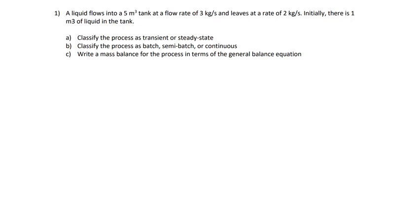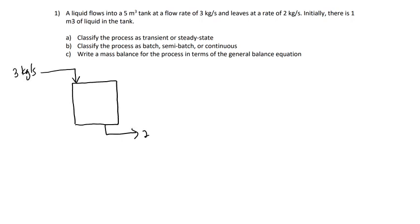Given the question, we should draw a diagram to visualize the problem. You have a 5 meter cube tank. The inlet flow rate into the tank is 3 kg per second and the outlet flow rate is 2 kg per second, and there is initially 1 meter cube of liquid in the tank. We're going to do questions A and C together, because when we write the mass balance of the process, we will know whether the process is transient or at steady state.